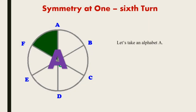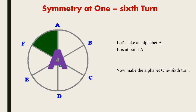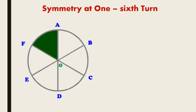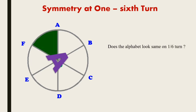Let's take the alphabet A. Now rotate this alphabet A from point A up to point B — making the alphabet do one-sixth turn. Does the alphabet look the same on one by six turn? Obviously not. This alphabet doesn't show any kind of rotational symmetry at one by six turn — the alphabet doesn't look the same on one by six turn.